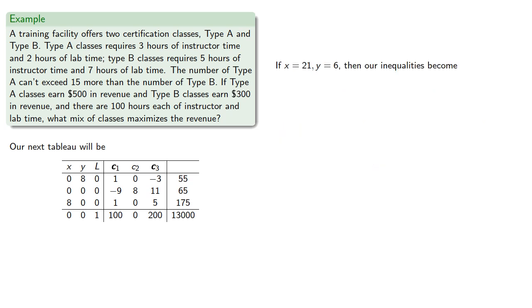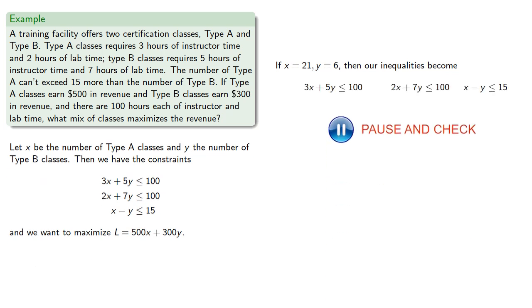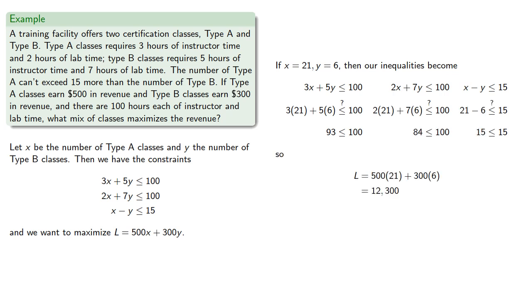If X equals 21 and Y equals 6, our inequalities are all satisfied, and so we can find the value of the objective function.